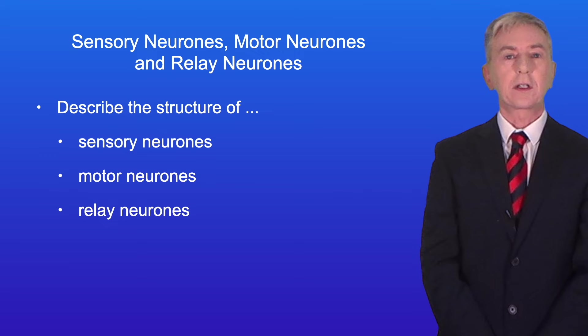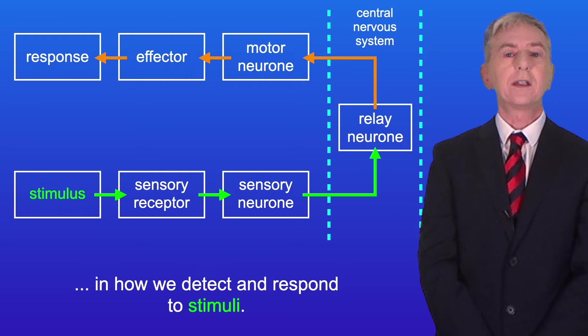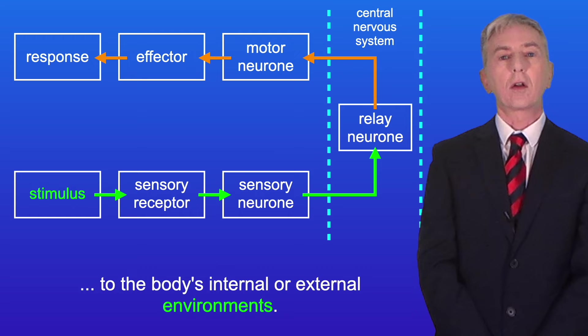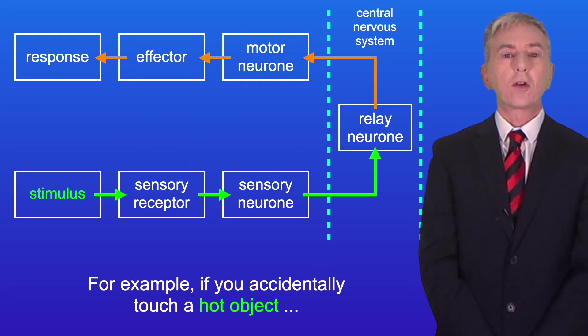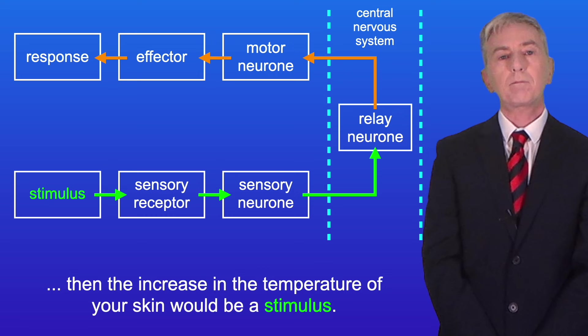The nervous system plays a critical role in how we detect and respond to stimuli. Stimuli are changes to the body's internal or external environments. For example, if you accidentally touch a hot object then the increase in the temperature of your skin would be a stimulus. Stimuli such as this are detected by sensory receptor cells.